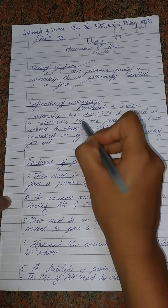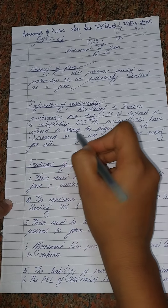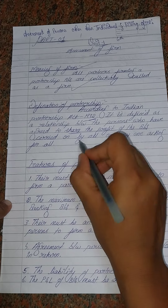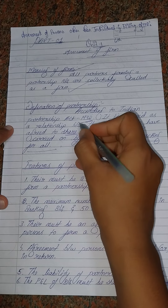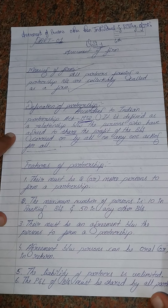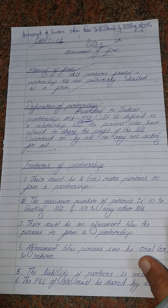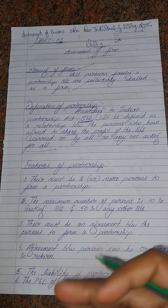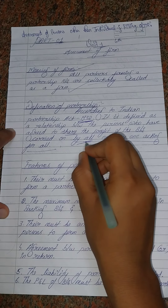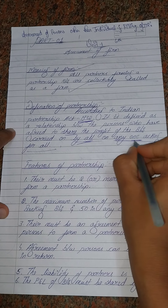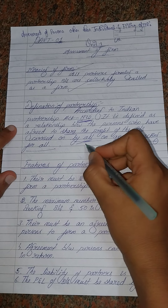The definition of partnership: according to the Indian Partnership Act 1932, it is defined as a relationship between persons who have agreed to share the profit of the business carried on by all, or by anyone acting for all. So partnership is a relationship between two or more parties who agree to share profits and losses equally, with all or one leader running the business.